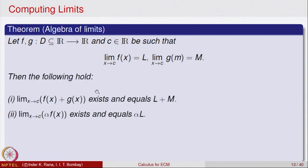Then the following hold. The first result says if I add the two functions — if I look at f(x) plus g(x), that is the sum of the two functions — and then take its limit, that also exists and is equal to L plus M. So the sum of the limits is equal to the limit of the sum. The second result says that if I multiply a function by alpha, then the limit of alpha times f(x) also exists and is equal to alpha times L. A scalar multiple of the function — its limit exists and is equal to the same scalar multiple of the corresponding limit.